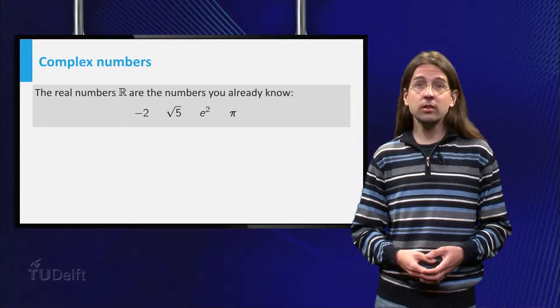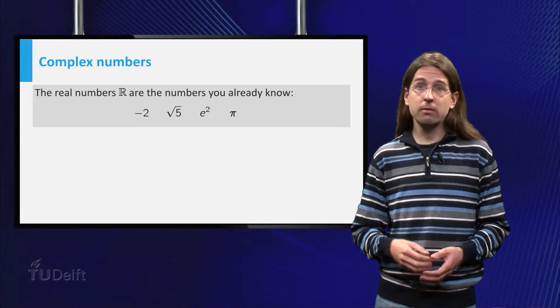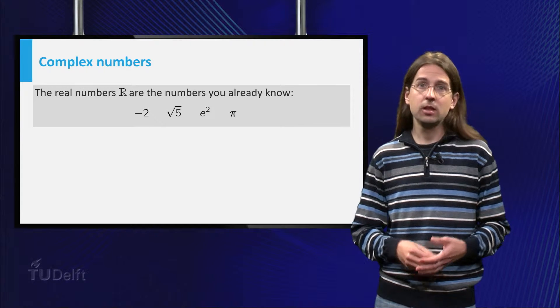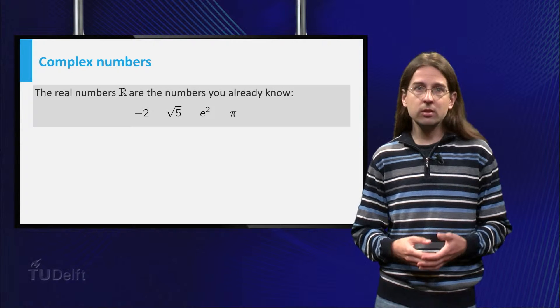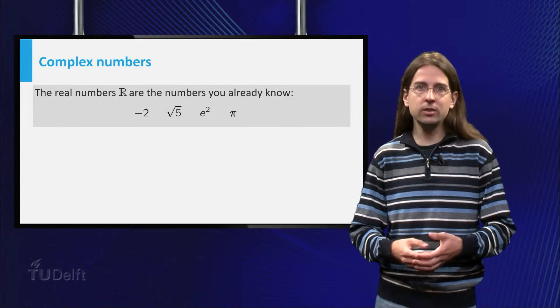The real numbers are the numbers that you already know, where we do not use i, whereas complex numbers will be those that you can make using i as well.